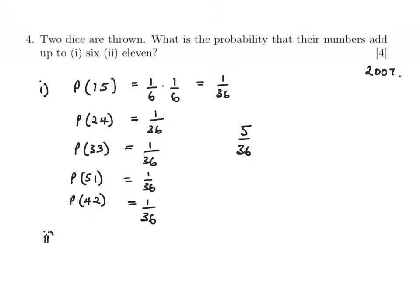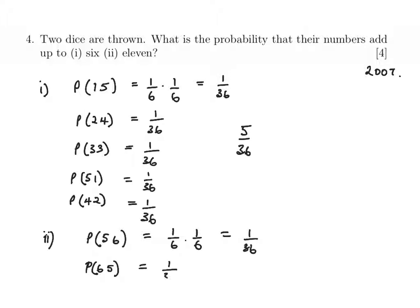The second part of the question: the probability of getting eleven. We could have a five first, then a six — that's one over six times one over six, which is one over thirty-six. And then we could have a six first, and then a five — that's also one over thirty-six. So the probability of getting eleven would be two over thirty-six, which simplifies to one over eighteen.